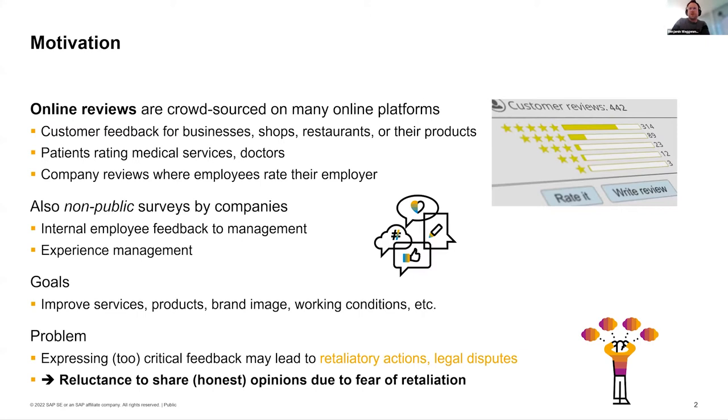We are talking about text anonymization. Text is a ubiquitous medium, and in particular online and in digital technologies. A prominent example is online reviews, which are crowdsourced on many online platforms like web shops such as Amazon, or also public review sites like Google Maps or Yelp for restaurant reviews. But also non-publicly within companies or between companies where management and HR might do surveys among employees to see how they can improve things within the company, for instance.